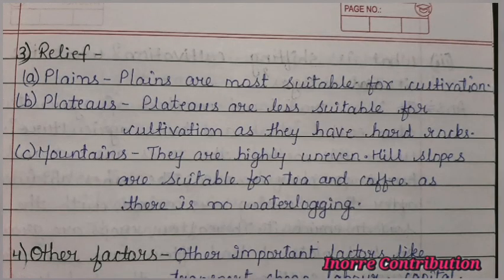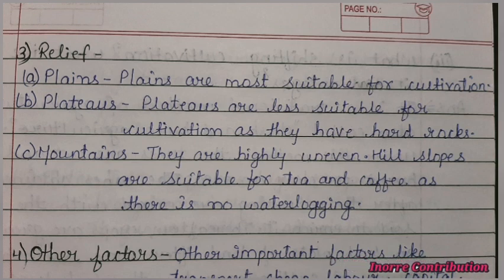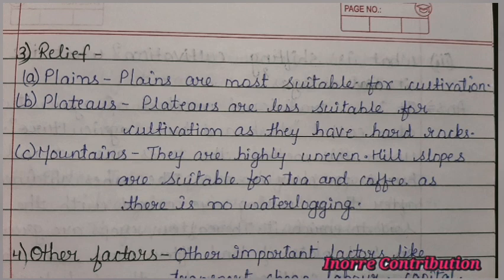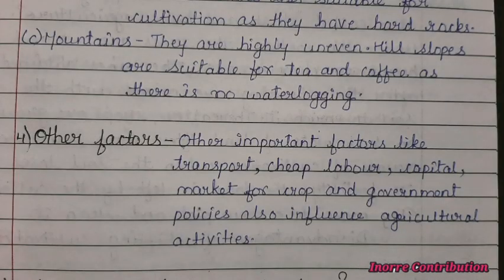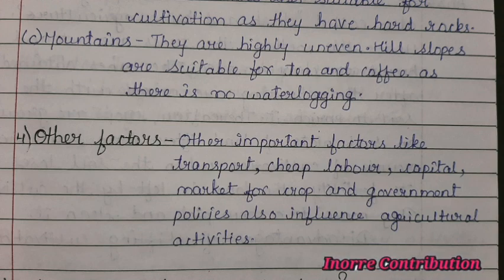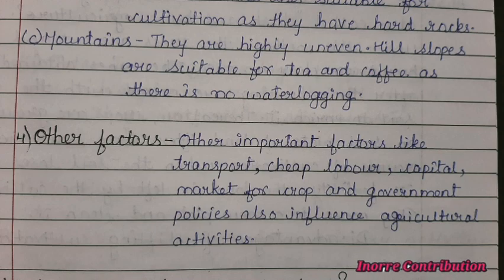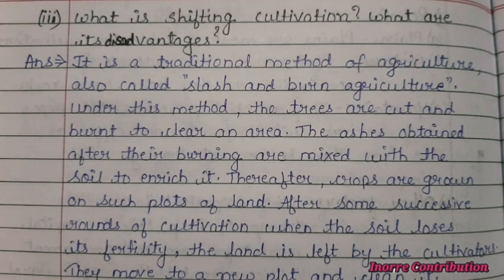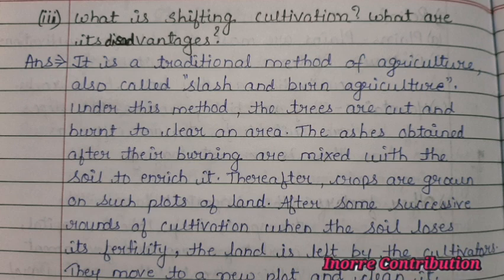Third factor is relief. Plains are most suitable for cultivation. Plateaus are less suitable for cultivation as they have hard rocks. Mountains are highly uneven; however, hill slopes are suitable for tea and coffee as there is no water logging. Other important factors like transport, cheap labor, capital, market for crops, and government policies also influence agricultural activities.